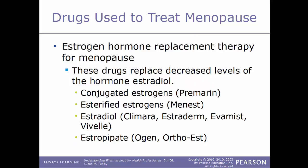Estrogen hormone replacement therapy drugs replace the decreased levels of estradiol. These could include conjugated estrogens such as Premarin, esterified estrogens such as Menest, estradiol (trade names Climara, Estraderm, Evamist, and Vivelle), and estropipate (trade names Ogen and Ortho-Est).